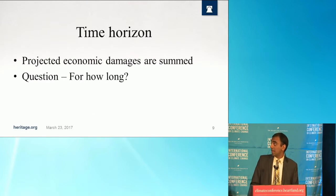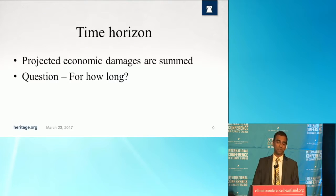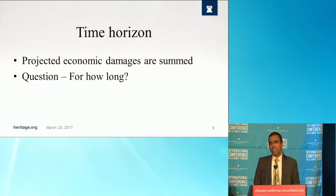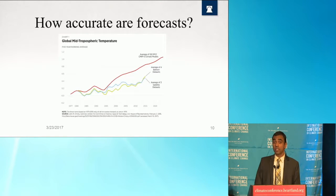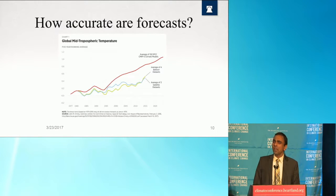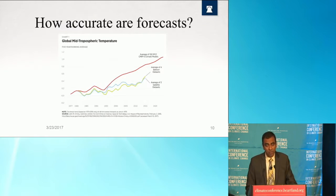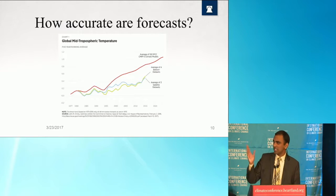Secondly, there's a specification of a time horizon. Projected economic damages are summed — but for how long? These models attempt to make projections 300 years into the future. If you think about Dr. John Christie's testimony in front of Congress, the House Science and Tech Committee last year, he juxtaposed temperature extrapolations from IPCC models against actual data, and these models grossly overpredict temperatures. So when you think about it, how on earth can they forecast 300 years into the future when they can't even predict 20?